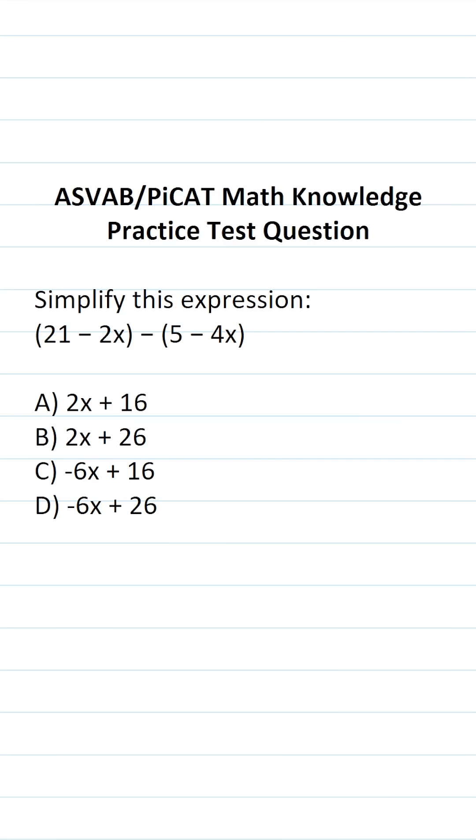This math knowledge practice test question for the ASVAB and PiCAT says simplify this expression: we have 21 minus 2x in parentheses, minus 5 minus 4x in parentheses.